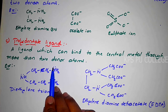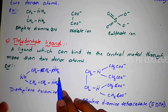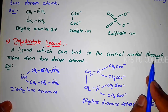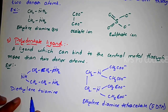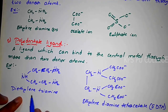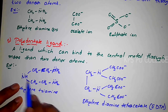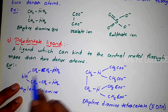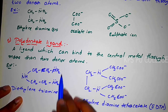Monodentate has one or two donor atoms, whereas polydentate may have three, four, five, or six donor atoms. The ligand binds to the central metal atom through more than two donor atoms. For example, diethylene triamine has three donor atoms linked to the central metal atom, so it is a tridentate ligand.